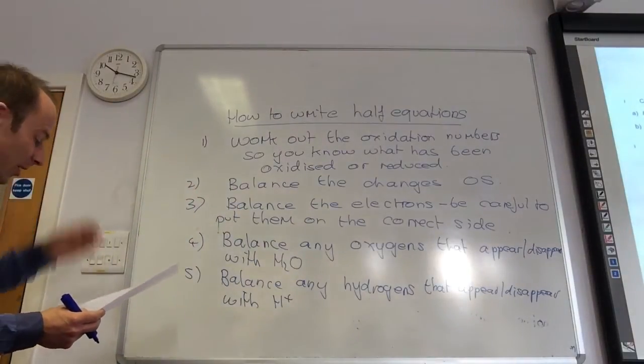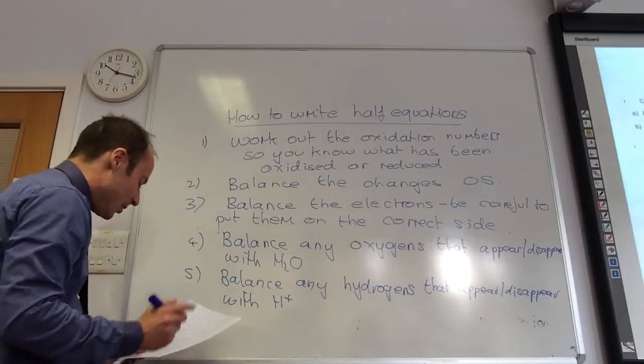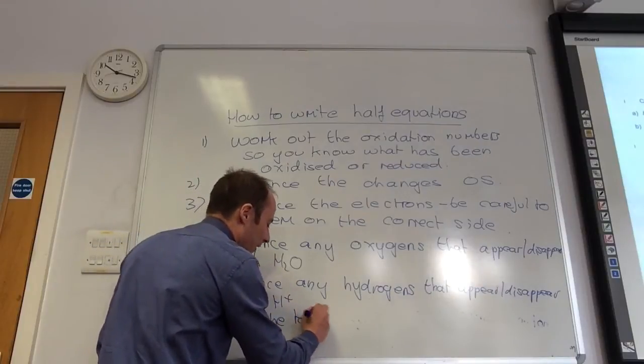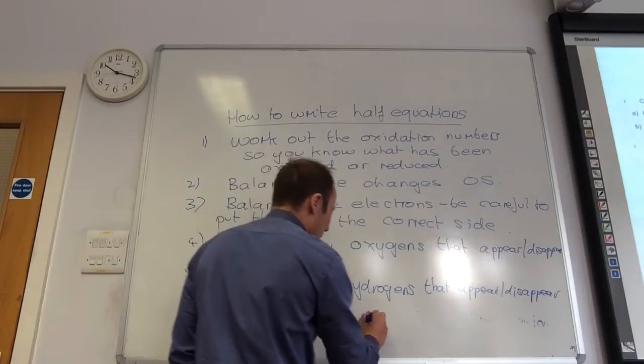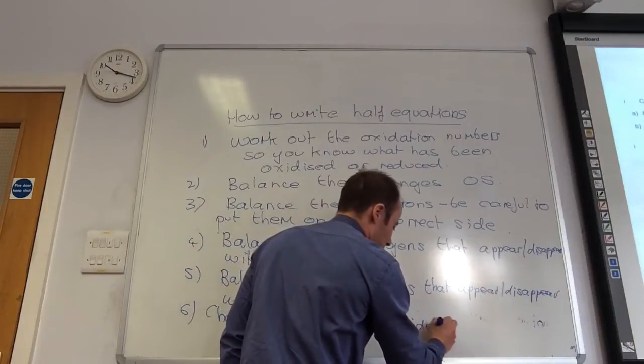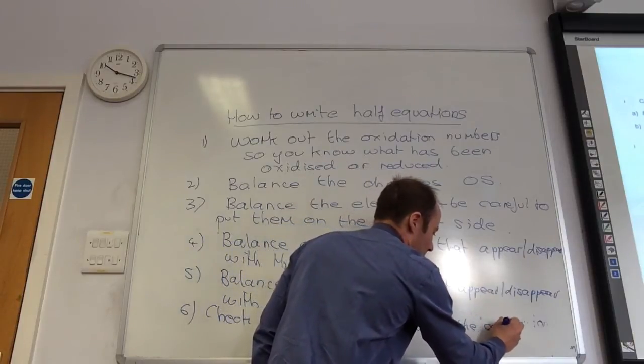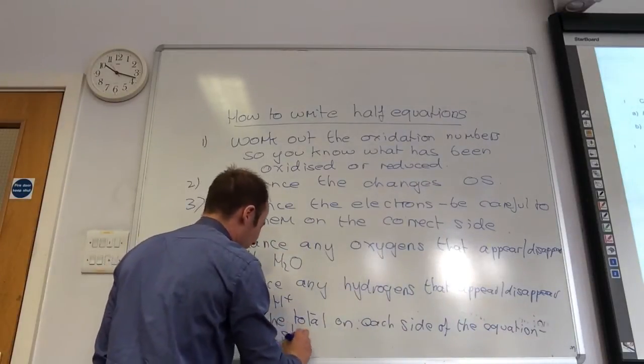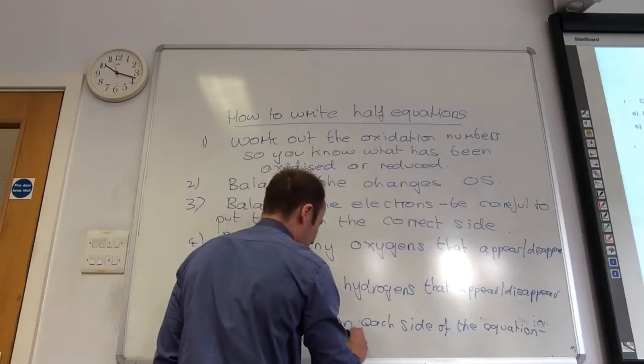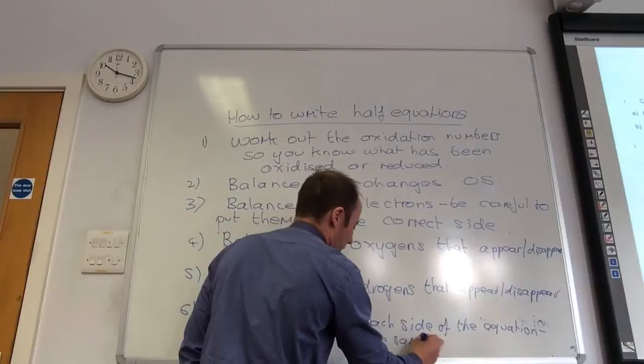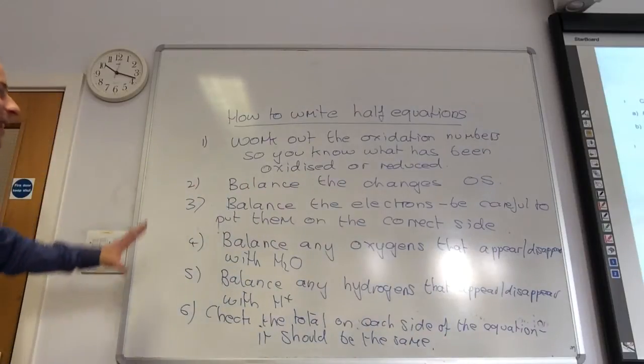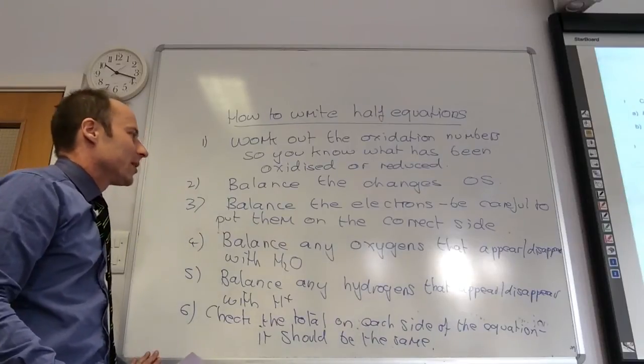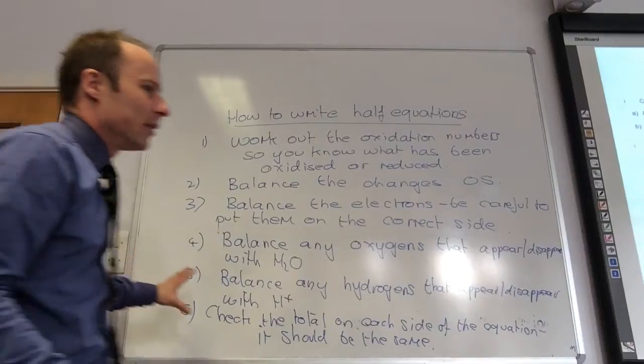And number six is you check. This is your final check. The total charge on each side of the equation should be the same. If it isn't, you've got something wrong. Normally, that's quite a good way. Because if you've done step three incorrectly, your charge on each side won't work out.